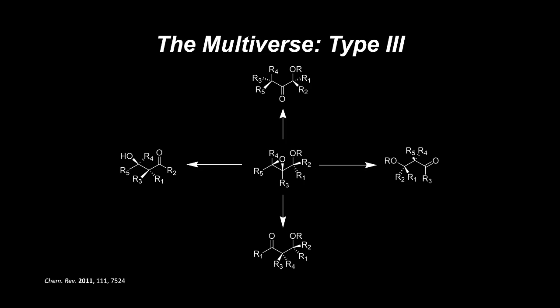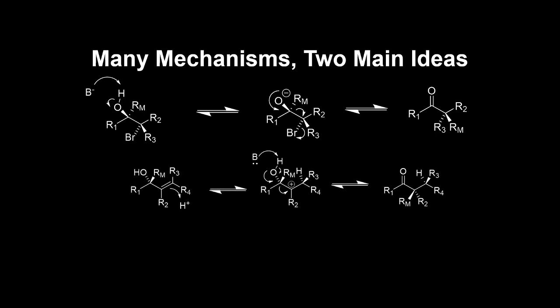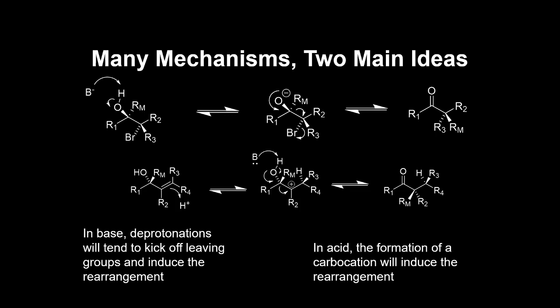Knowing which kinds of groups vicinal to an alcohol will induce a semi-pinacol rearrangement is useful when trying to predict products. Rather than going through exact mechanisms for each of the seven different rearrangements, it's more valuable to talk about the big picture. Generally, when using basic conditions, a deprotonation will free up a lone pair that will form the carbonyl, pushing the alkyl group to the adjacent carbon and kicking off the leaving group. In acid, a carbocation will be formed, which induces the alkyl shift and subsequent carbonyl formation. This applies to type 3 rearrangements as well, although these steps will be incorporated as the epoxide ring opening.